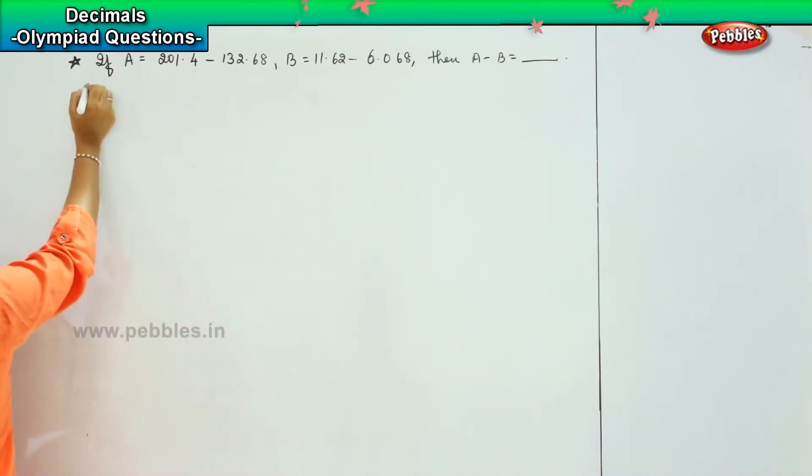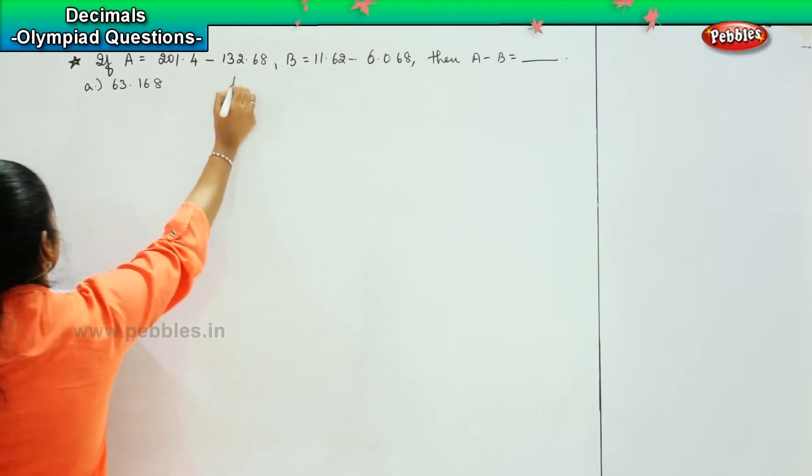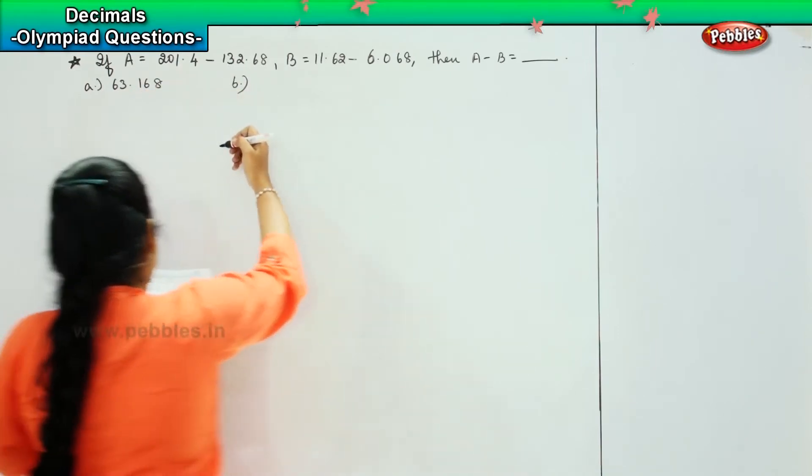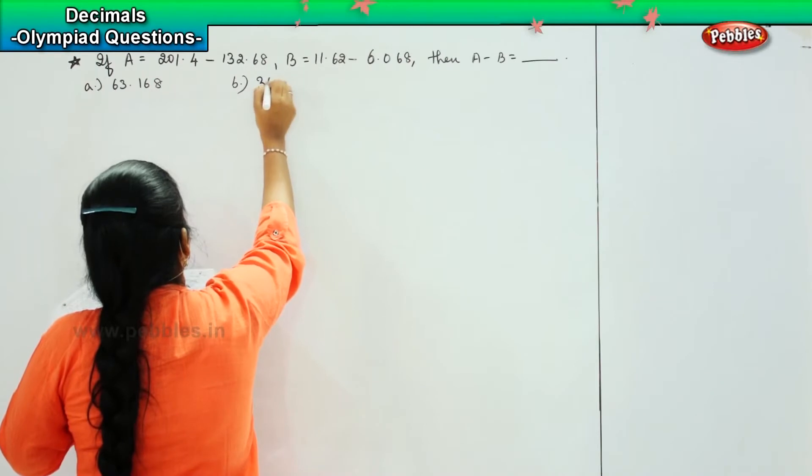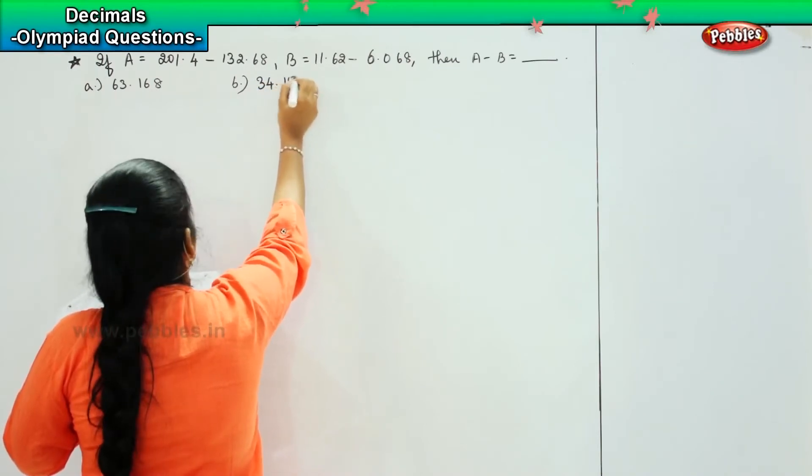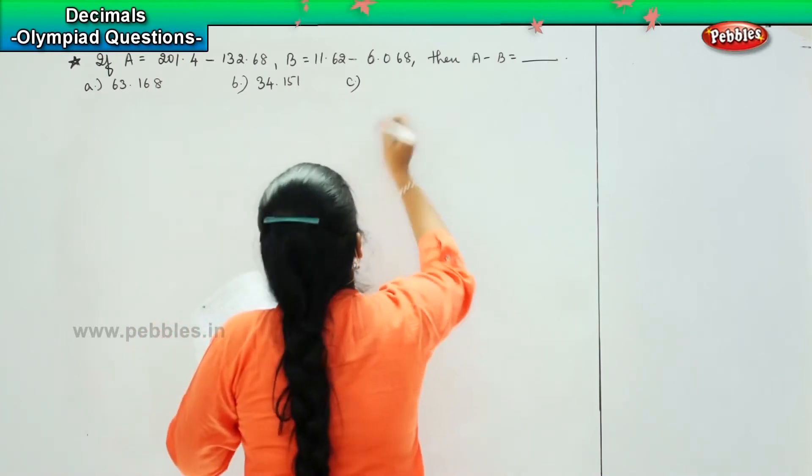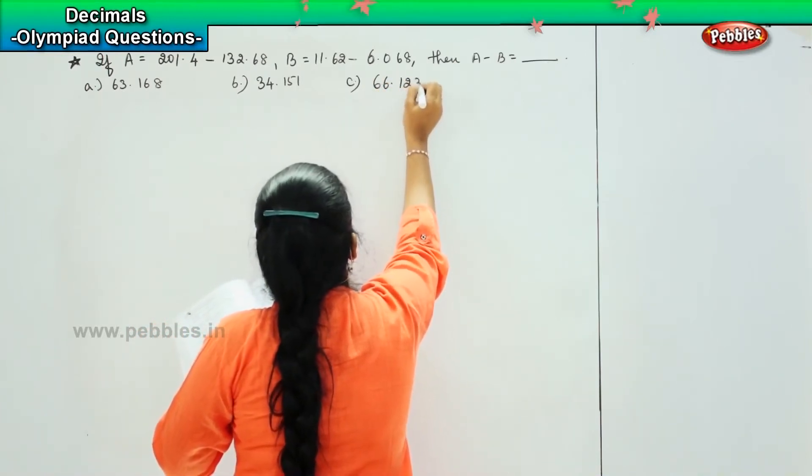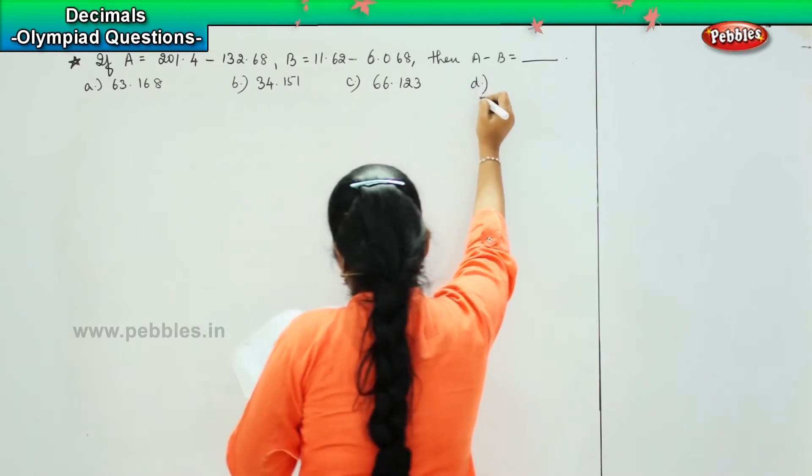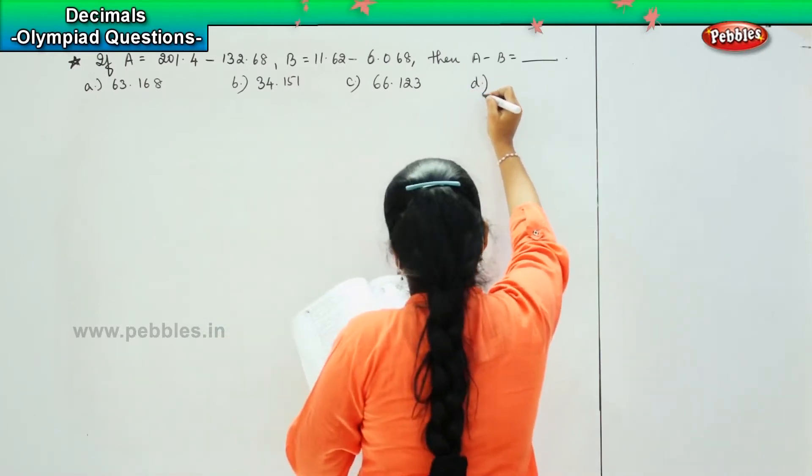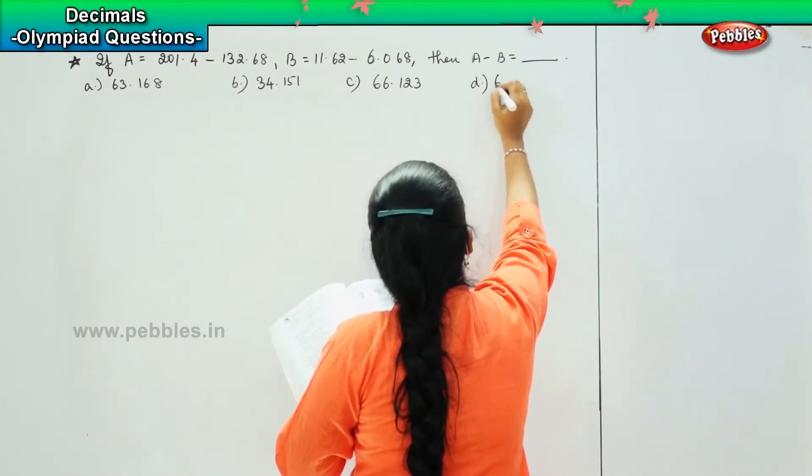And the options are 63.168, option B, 34.151, option C, 66.123, and option D, 62.398.